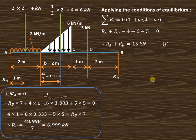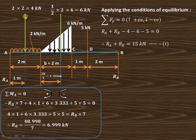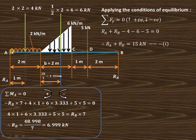Now applying the second condition — summation of moments equals 0 — taking moments about point A. RB has an anti-clockwise moment at a distance of 7 meters, so minus RB into 7. The 4 kilo newton load has a clockwise moment, 4 into 1. The 6 kilo newton load also has a clockwise moment at a distance of 2 plus 1.333, that is 3.333 meter. The 5 kilo newton load has a clockwise moment at a distance of 2 plus 2 plus 1, that is 5 meters.